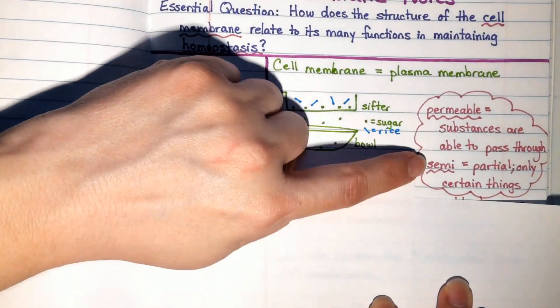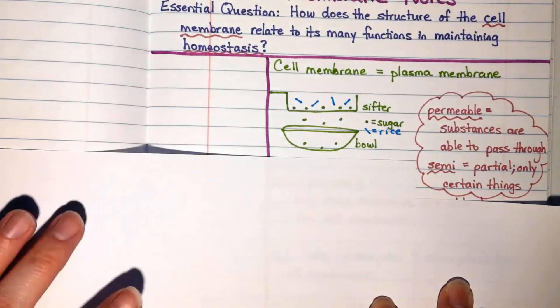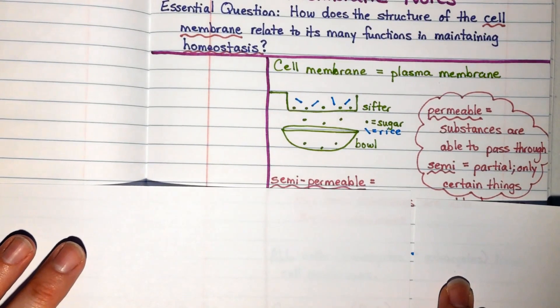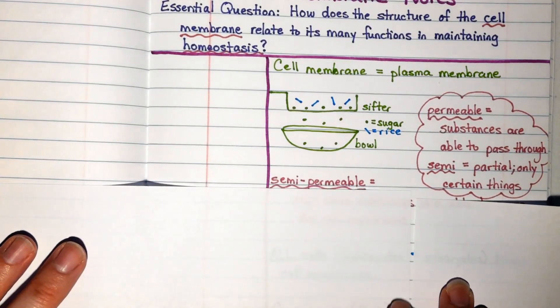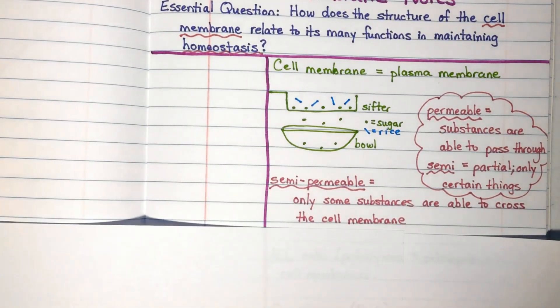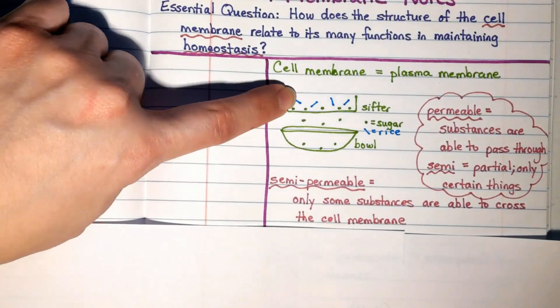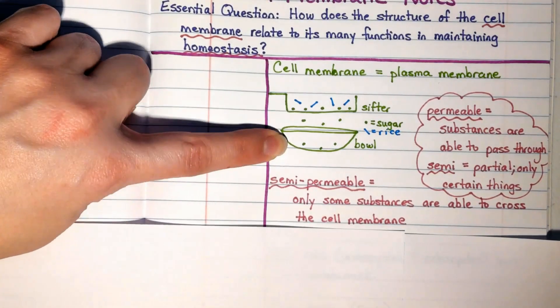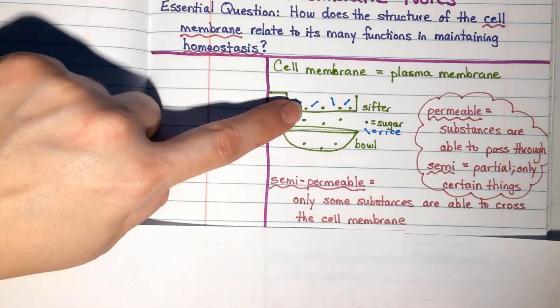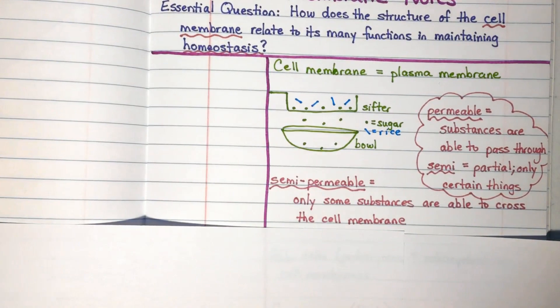So when it comes to cells, we're going to combine these two words together: semi and permeable. Semi-permeable describes the structure of a cell membrane in that only some substances are able to cross the cell membrane. So just like our sifter, some molecules can get into a cell, some molecules could get back out of a cell, and some molecules like the rice can't get in or out.